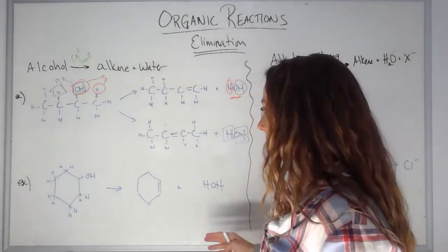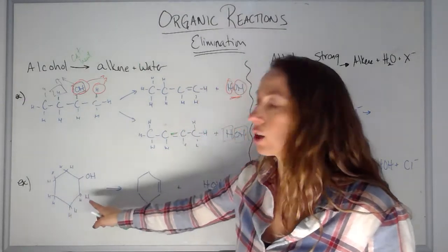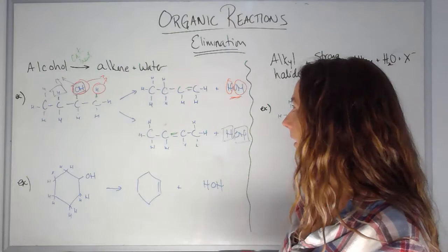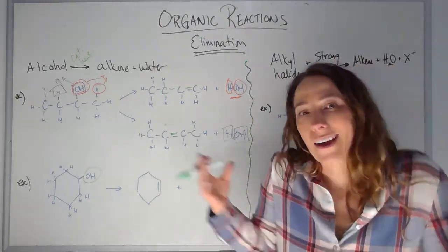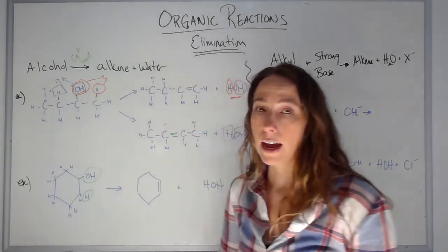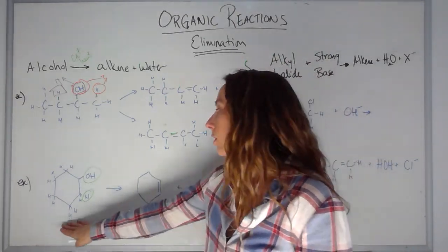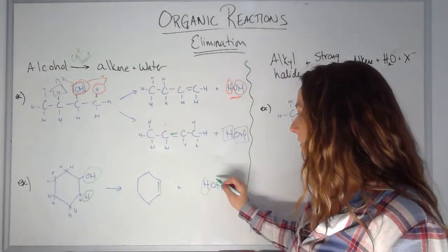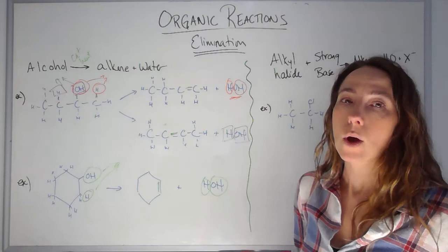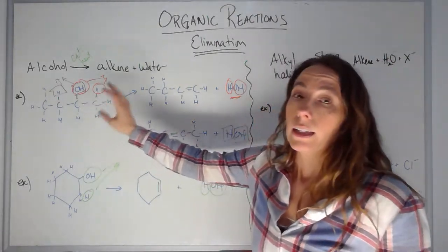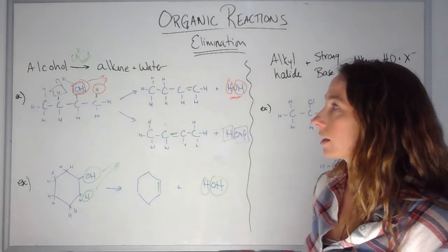Here's another example. I have an alcohol again — cyclohexanol. I'm going to let go of the OH and a neighboring H. Because it's a ring, it doesn't matter which neighbor; it just keeps turning. I let go of that H and form the double bond, going from cyclohexanol to cyclohexene, with the H and OH coming off to form water and the double bond forming in the ring. So that's the first type of elimination: an alcohol lets go of an OH and a neighboring H to form an alkene and water.